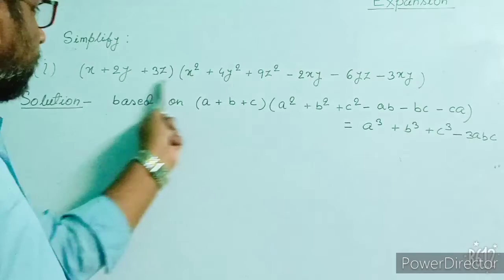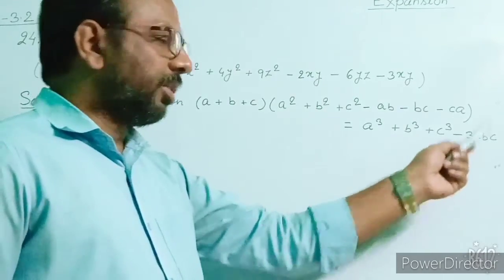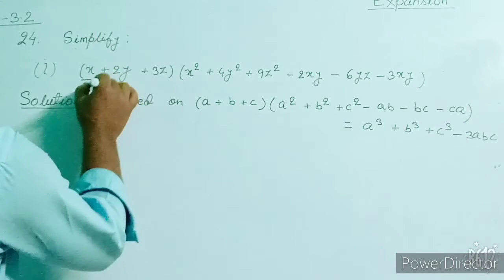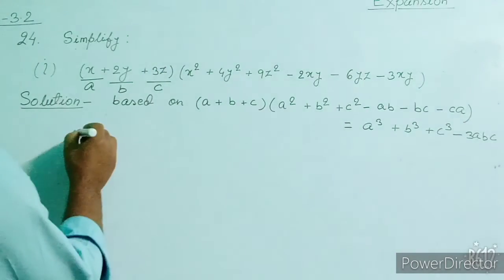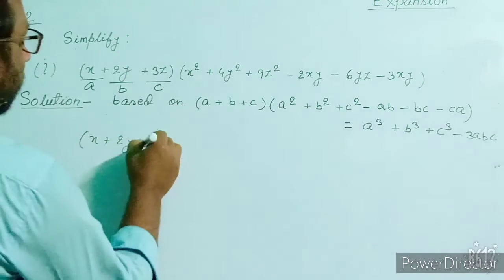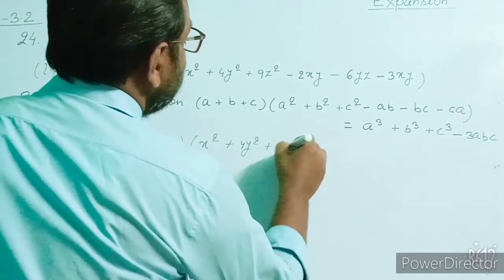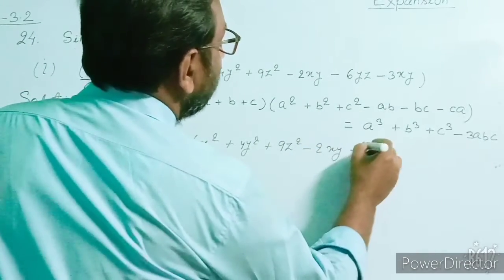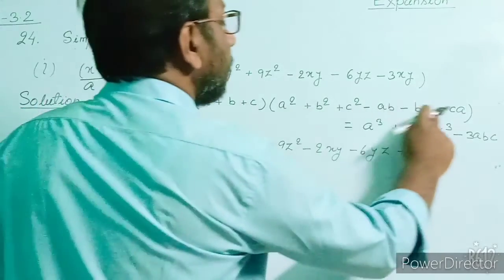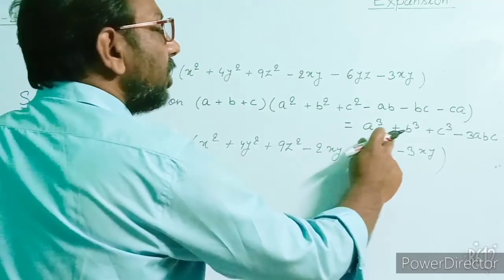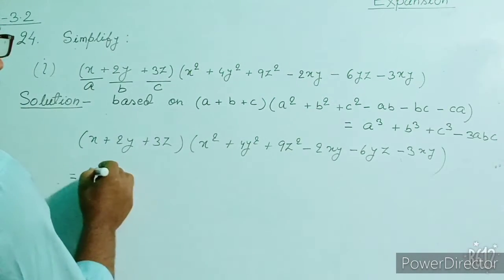If we write this given expression in this form, then it will be equal to a cubed plus b cubed plus c cubed minus 3abc. At the place of a we have x, at the place of b we have 2y, and at the place of c we have 3z. We write the expression again: x plus 2y plus 3z, into x squared plus 4y squared plus 9z squared minus 2xy minus 6yz minus 3zx. Let us try to write this expression in this form.